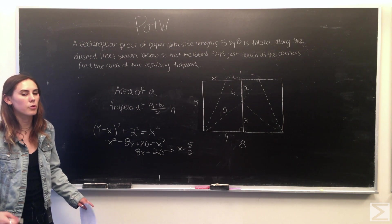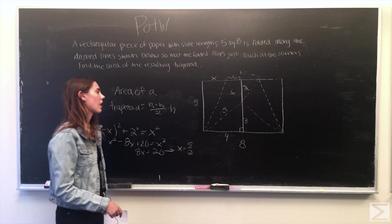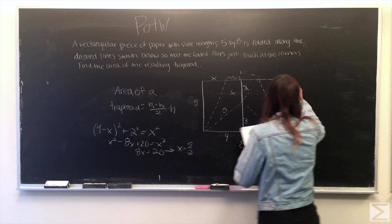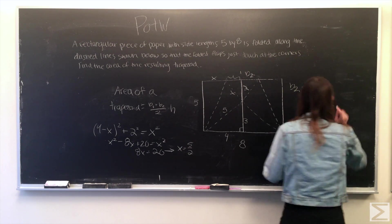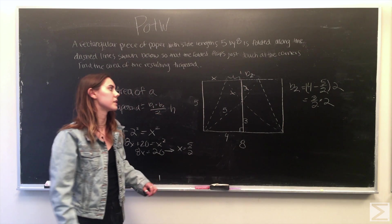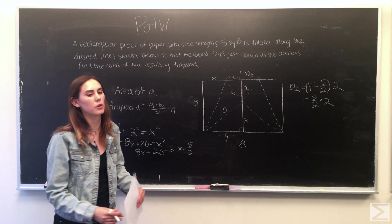We can solve for half of the top base of the trapezoid by subtracting X from 4. So then we know that the top base is actually equal to 3 over 2 times 2 because we have only solved for half of it.